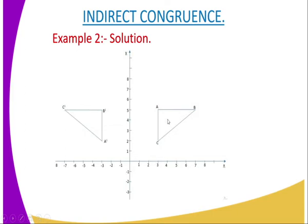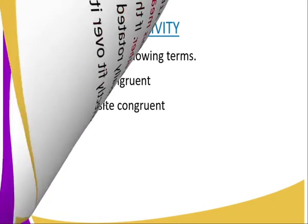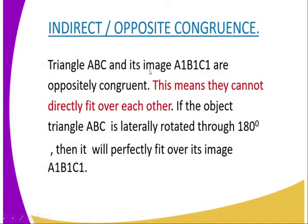In order for the object triangle to fit onto the image triangle, it must be rotated through an angle of 180 degrees. We can conclude that triangle ABC and its image A prime B prime C prime are oppositely congruent — they cannot directly fit over each other. If the object triangle ABC is laterally rotated through 180 degrees, then it will perfectly fit onto its image. That kind of congruence is what we refer to as opposite or indirect congruence.